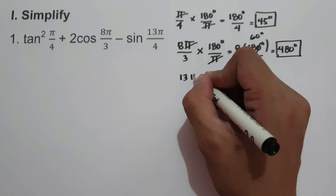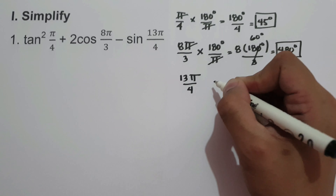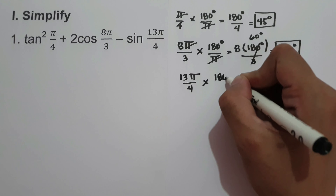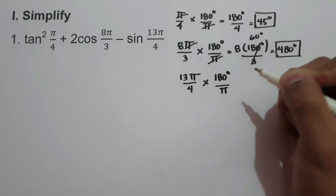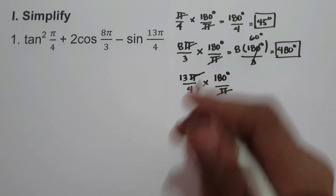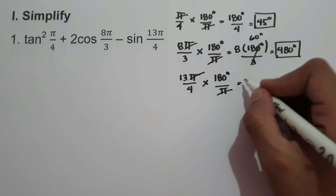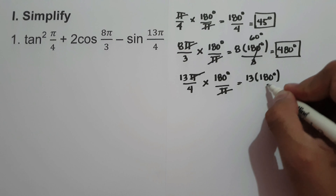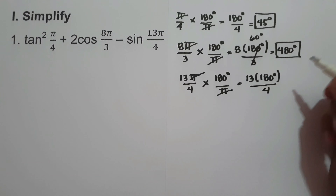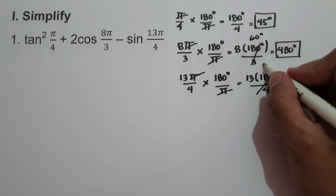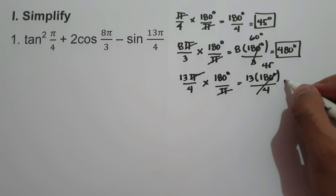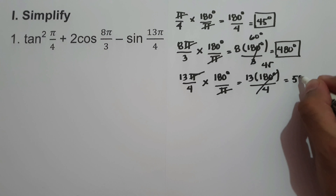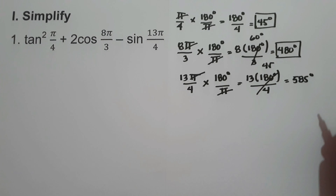Then we have 13 pi over 4. Let us convert to degrees by multiplying 180 degrees over pi, cancel pi, and we have 13 times 180 degrees over 4. 180 degrees divided by 4 is 45, and 45 times 13 is 585 degrees.